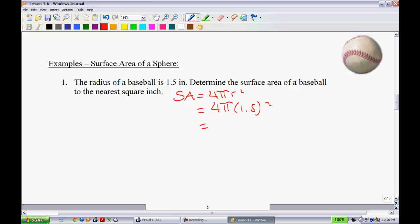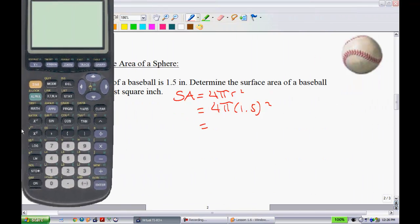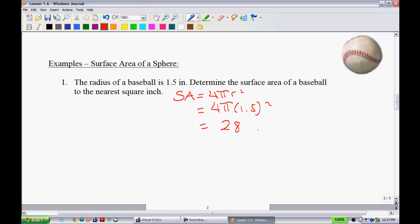All right, so we got 4π times 1.5 all squared. I'll use my calculator here. And we have 4. Make sure you use the π, not 3.14. Okay, 4π, 1.5 squared. Gives me 28.27. And I think it said to round to the nearest square inch, so we're going to say it is 28 inches squared.